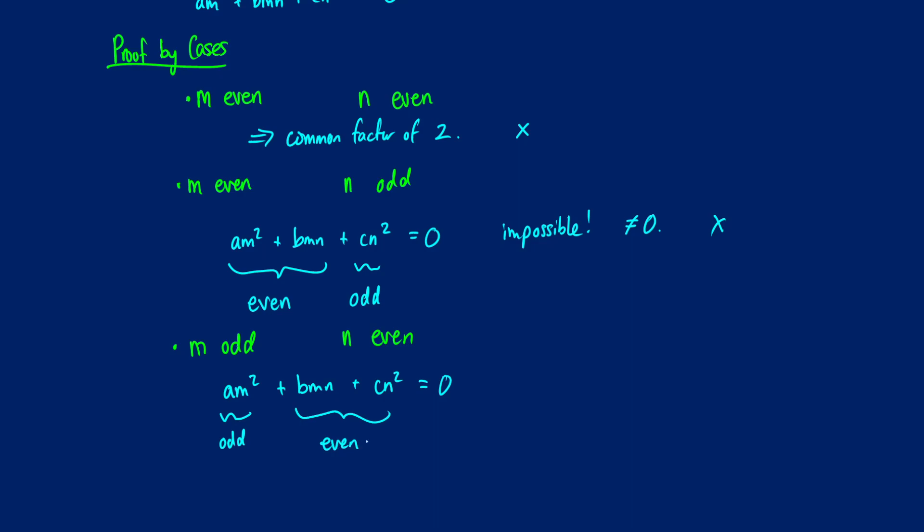Now we're running into the same issue. We have two evens and one odd, so our final result can't be even. It's going to be impossible to get to 0. So that can't equal 0. We have a contradiction there.